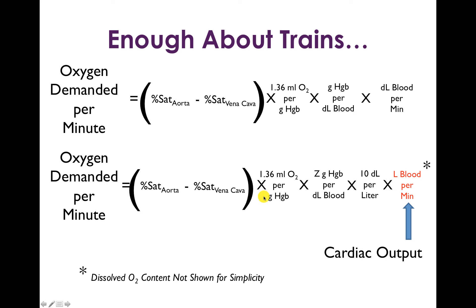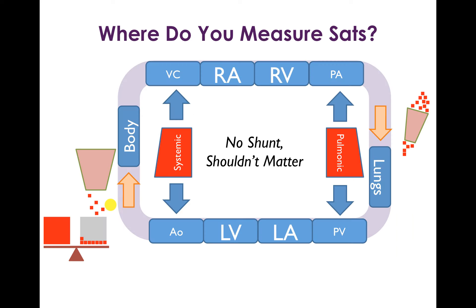Here are some real numbers to go alongside it. We're not showing dissolved oxygen content, which is really only important when people are on 100% oxygen. Liters of blood per minute is cardiac output. All we need in order to define cardiac output with the Fick principle for any given patient is to know their hemoglobin concentration, the oxygen saturation in the aorta and vena cava, and to physically measure the oxygen demanded per minute using a metabolic cart, where we actually measure how much oxygen is used up by the patient's breathing. That's the Fick equation.